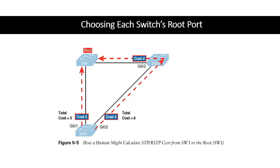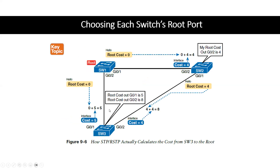BPDUs are still being sent between these switches during step two. We're still calculating. These switches are going to make sure they try to come to the same conclusion, but essentially each switch uses its own process to determine who its root port is, because we need to make sure we build a stable spanning tree.